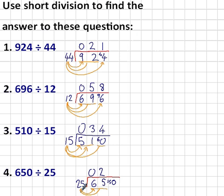So does 25 go into 150? Yes, it does. If I count up in 25s: 25, 50, 75, 100, 125, 150. That goes in 6 times. So my answer is 26. Let's check that with a quick multiplication.